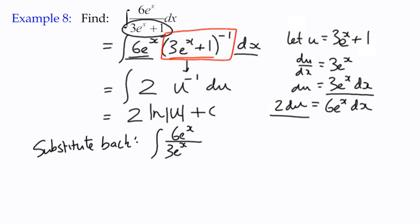Substitute back. What did we start with? The integral of 6e^x over (3e^x + 1) with respect to x is 2 times the natural log of u, which is |3e^x + 1|. I put my little parallel lines to do the absolute value—we don't want a negative value in there—plus the constant of integration.